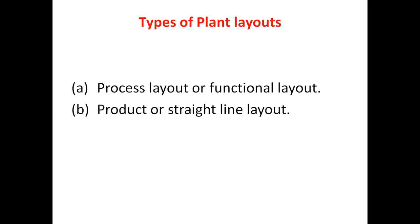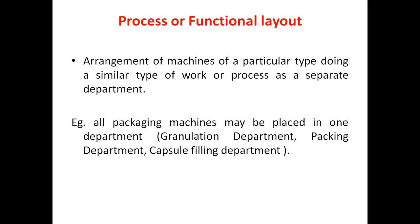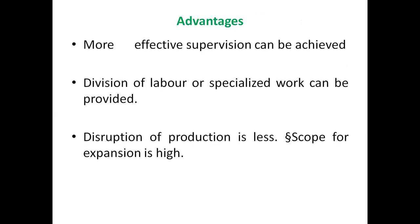The process layout or functional layout involves the arrangement of machines of a particular type doing a similar type of work or process as a separate department. For example, all packing machines can be placed in one department. The major advantages are more effective supervision, division of labor or specialized work, less disruption of production, and a high scope for expansion.